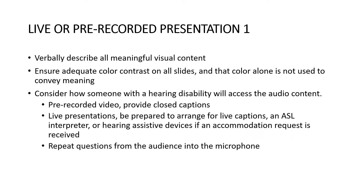For a live or pre-recorded presentation, verbally describe all meaningful visual content. Ensure adequate color contrast on all slides and that color alone is not used to convey meaning. Consider how someone with a hearing disability will access audio content — if it's pre-recorded, provide captions; for live presentations, be prepared to arrange for a live captionist or ASL interpreter if an accommodation request is received. Also, repeat questions from the audience into the microphone so everyone can hear.